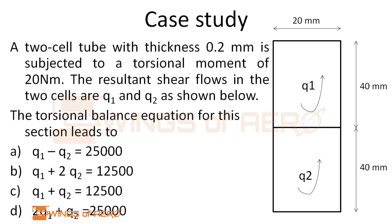As shown in figure, you can see there are two multi-cells. The question is: a two-cell tube with thickness 0.2 mm is subjected to a torsional moment of 20 Nm. The resultant shear flows in the two cells are q1 and q2 as shown below. The torsional balance equation for this section leads to, there are four options.